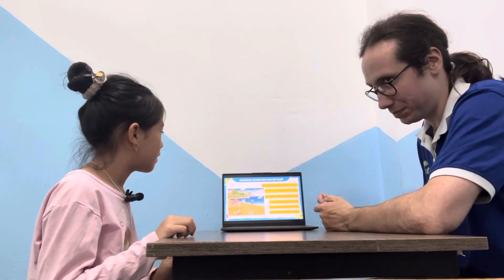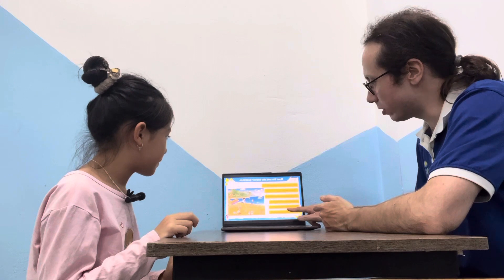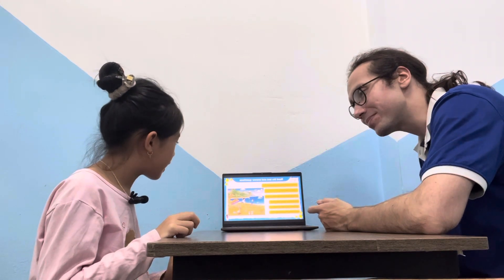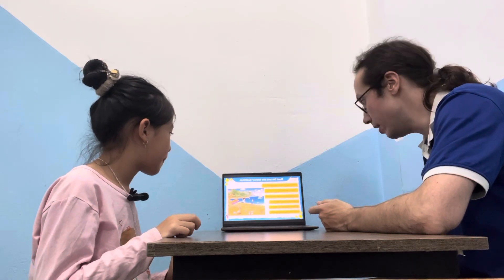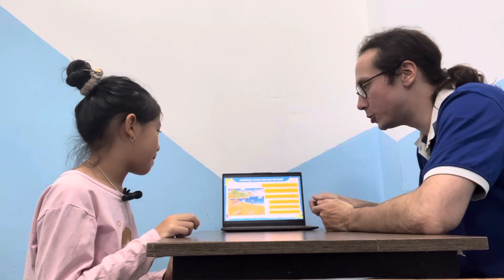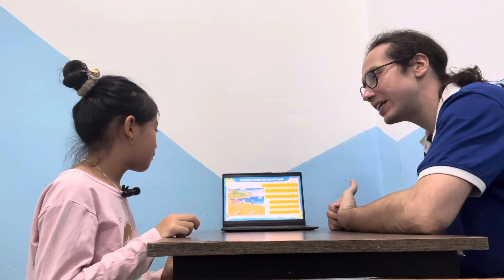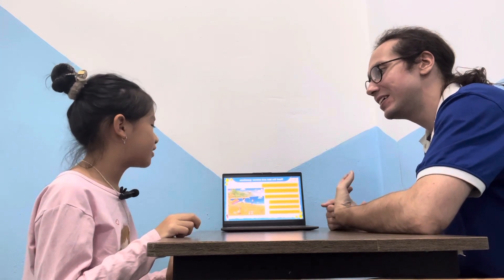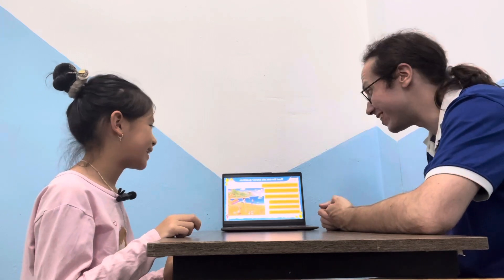What can frog do? What can frog do? Yes. Okay. What can fish do? What? Swimming. Swimming. Swimming. Very, very nice. Okay.